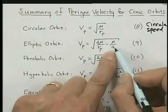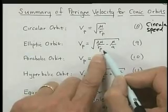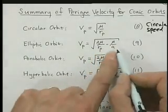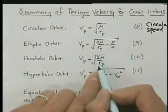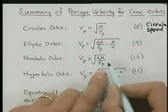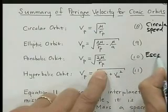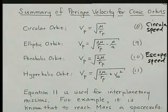If a becomes a very large number, if a goes off to infinity, we end up with the square root of 2 mu over rp, which is the equation we have here in equation 10. So if a goes to infinity, that is, if you want to escape the earth, you need square root of the quantity 2 mu over rp. This is called the escape speed, or escape velocity.